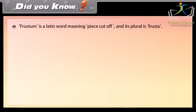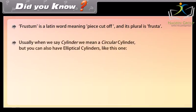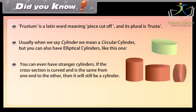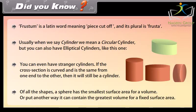Did you know? Frustum is a Latin word meaning 'piece cut off' and its plural is frusta. Usually when we say cylinder we mean a circular cylinder, but you can also have elliptical cylinders. If the cross-section is curved and is the same from one end to the other, it is still a cylinder. Of all shapes, a sphere has the smallest surface area for a given volume — or put another way, it can contain the greatest volume for a fixed surface area.